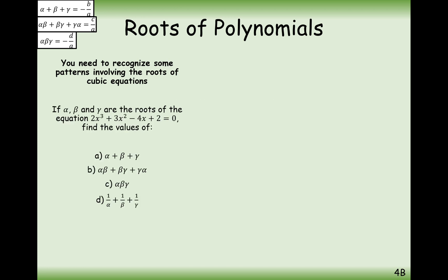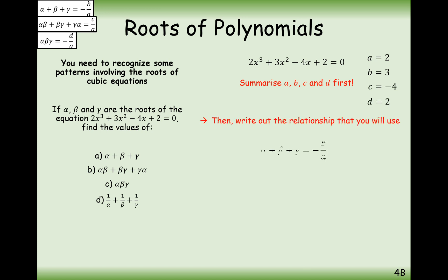Let's try some questions. Alpha, beta, gamma are roots of 2x³ + 3x² − 4x + 2 = 0. Find: (a) α + β + γ, (b) αβ + βγ + γα, (c) αβγ, and (d) 1/α + 1/β + 1/γ. First, identify a = 2, b = 3, c = −4, d = 2. For part (a): α + β + γ = −b/a = −3/2. You don't need to find the actual roots; the answer is −3/2.